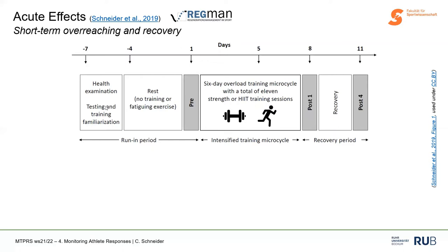We had a general health examination and familiarization one week before training started, then a rest period of at least four days where athletes did no training or fatiguing exercises. Then we had baseline testing where performance was evaluated. Then six days of very demanding training — athletes trained two sessions a day, and we wanted to get them fatigued without injuring them. Then post-testing after the six days, a short recovery period of three days, and performance was evaluated again. So we had a short run-in period, an intensified overreaching microcycle, and then a short recovery period.